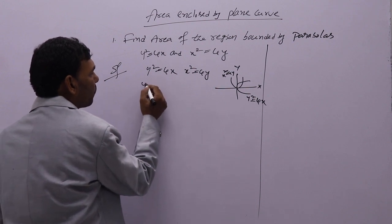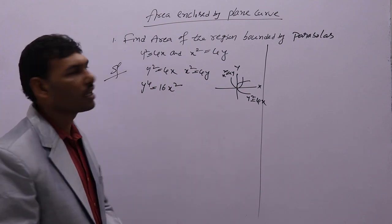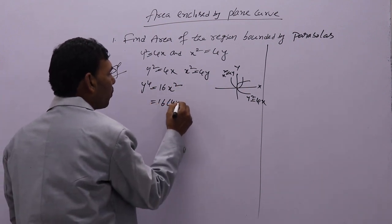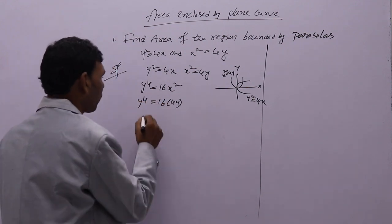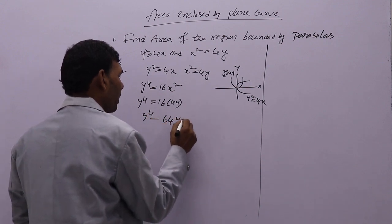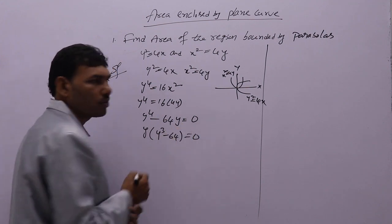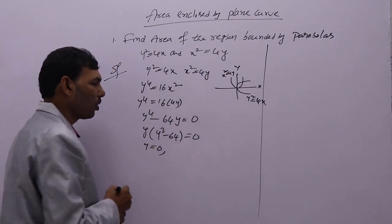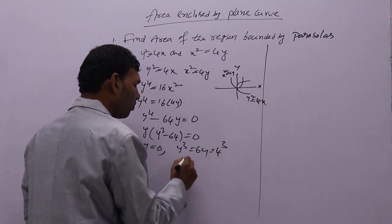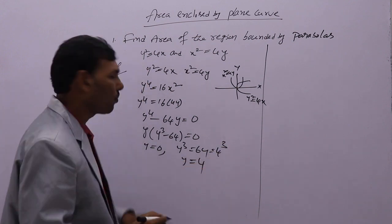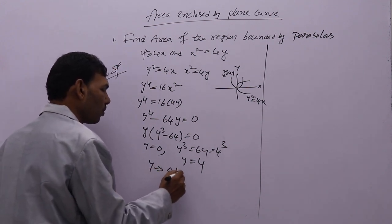If you square both sides, you get y to the power of 4 equal to 16x squared. Now x squared is 4y, so that gives 16 into 4y. This leads to y to the power 4 minus 64y equal to 0. Taking out y as a common factor: y times (y cubed minus 64) equal to 0. That means y will be 0, or y cubed equal to 64. Since 64 can be written as 4 cubed, y will be 4. So y limits are 0 to 4.